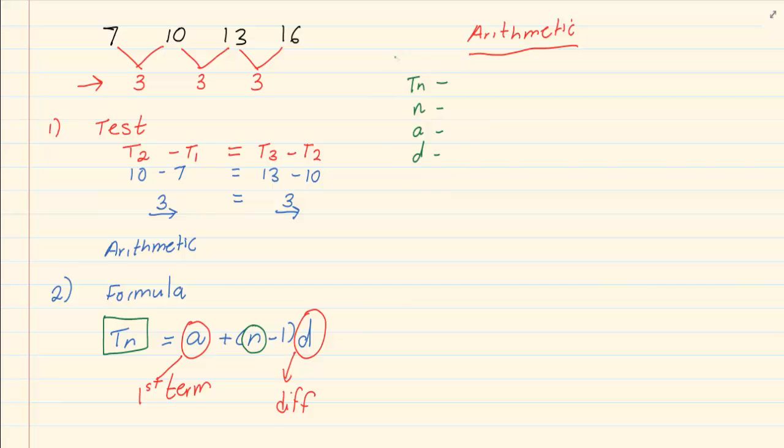Then you fill in what you have. You would see by doing this later when we are doing simultaneous equations, this method becomes easier because it is easier to read and it is easier to understand. So number one, we start by writing Tn, N, A and D. When they are asking you for the formula, all you need is A and D.